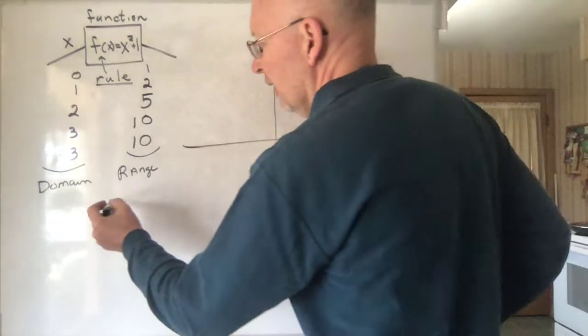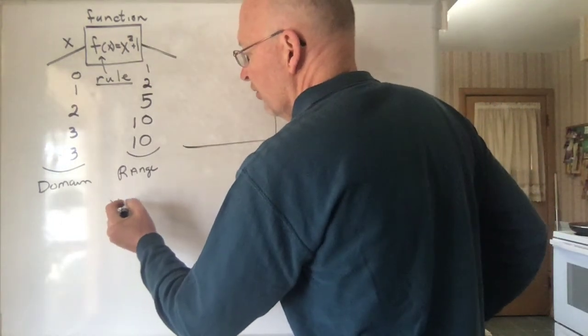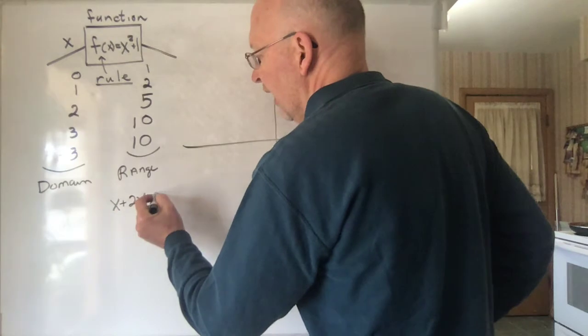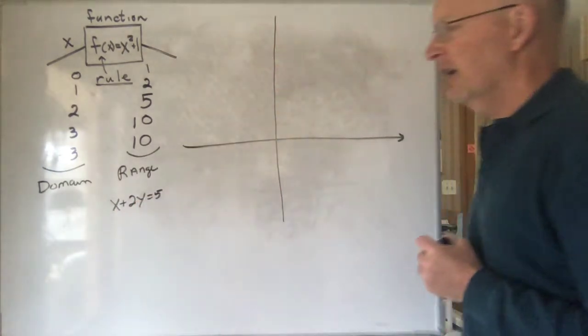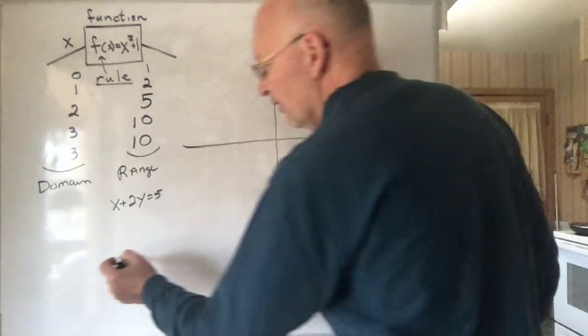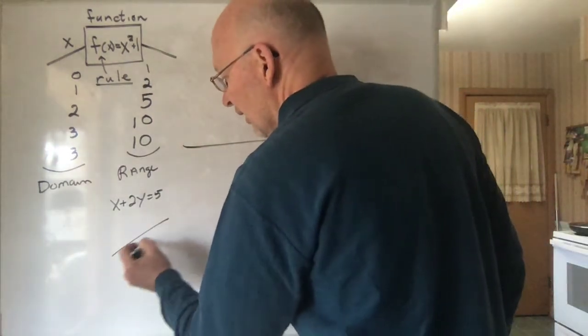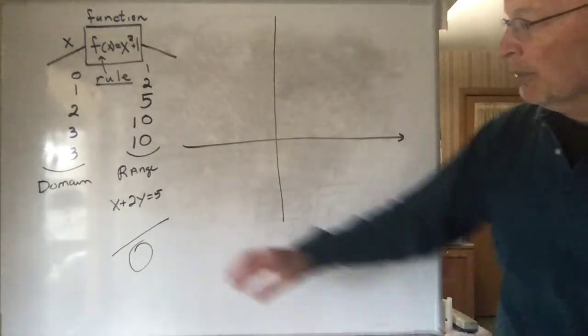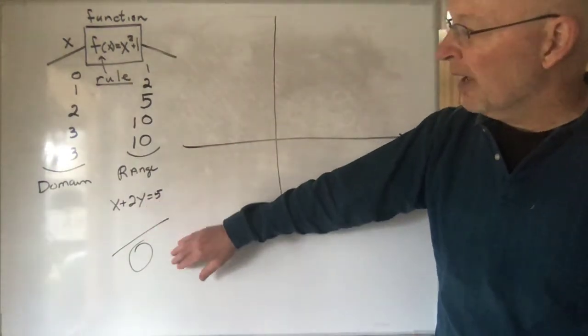And Descartes thought very carefully about mathematics. And one thing he also realized about mathematics is that you could take two areas of mathematics, namely algebra, things like x plus 2y is equal to 5. And also things in geometry. Geometry, you have lines and circles and things like that. And he found a way to be able to combine these two areas of mathematics.